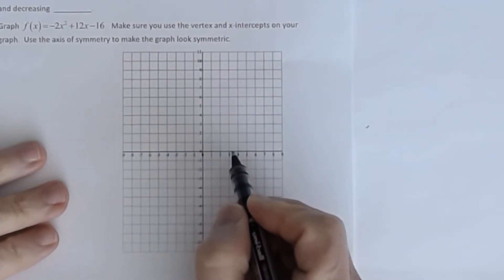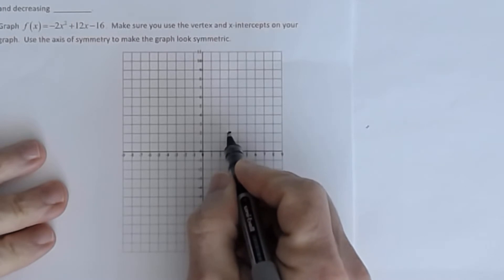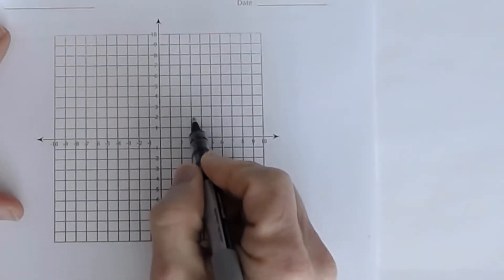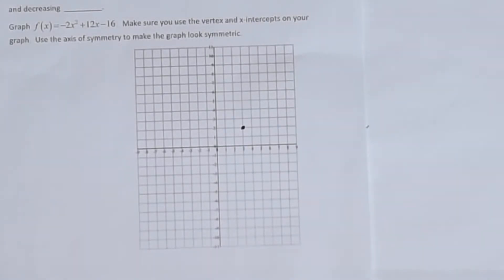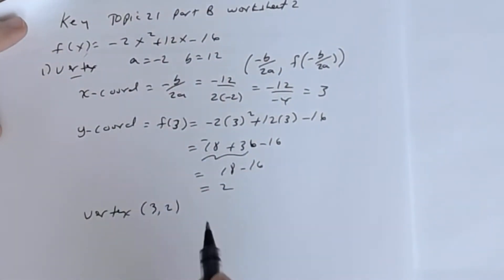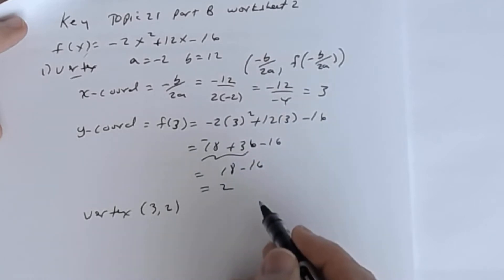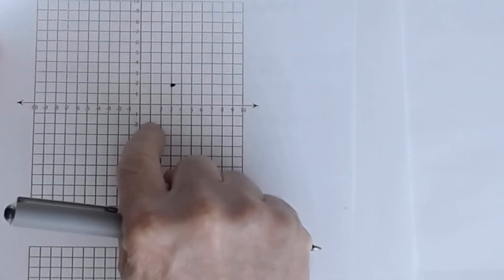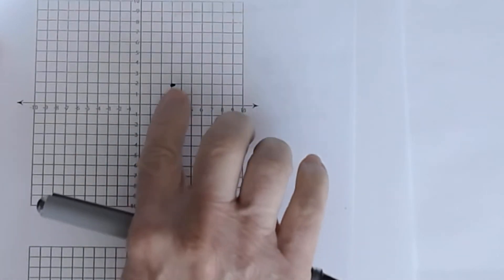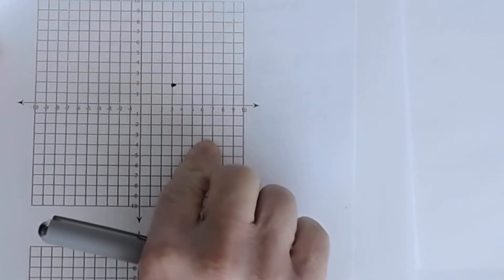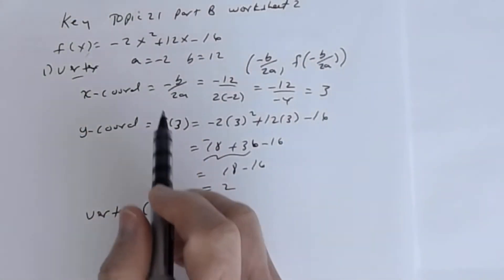In our coordinate plane, I'm going to plot the point (3, 2) — that's the vertex. Now remember that a is negative, so I know that my parabola is going to be concave down — it's going to open down. Since it opens down, notice it crosses the x-axis. There's always going to be a y-intercept, and there are x-intercepts here because it does cross the x-axis.